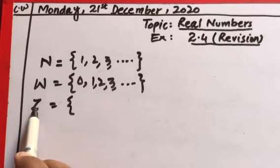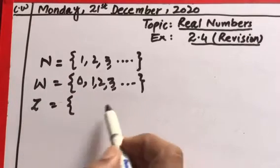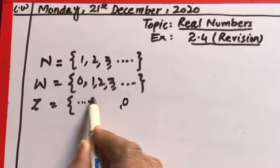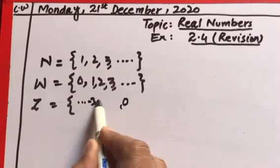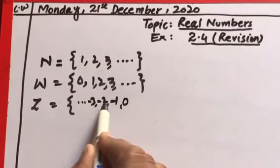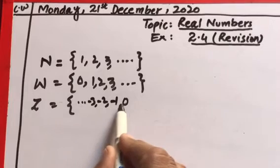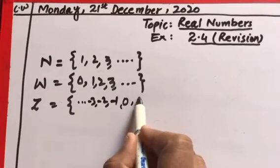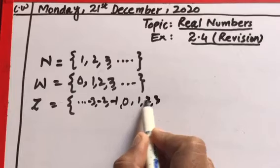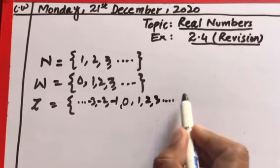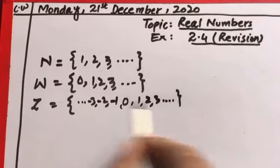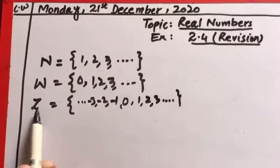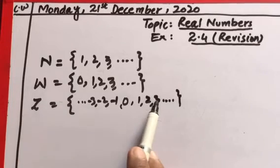The set of integers is represented by Z. We have −3, −2, −1 — these are called the negative integers, written on the left side of 0. And 1, 2, 3 are the positive integers, written on the right side of 0. That is the set of integers.